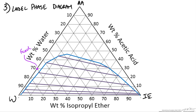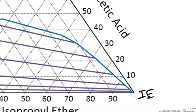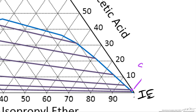Our solvent is 99% ether, so almost all the way at the apex with 1% acetic acid and no water. So we are going to draw it on the 0% water line roughly around there to indicate our 1% acetic acid. That is our solvent.